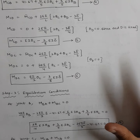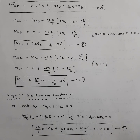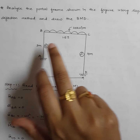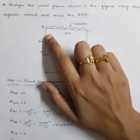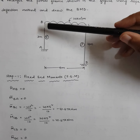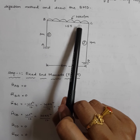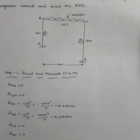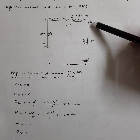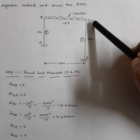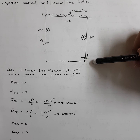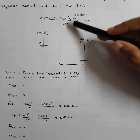Step 3 is writing the equilibrium conditions. We have two joints, B and C. The first equilibrium condition at joint B is MBA + MBC = 0. The second equilibrium condition at joint C is MCB + MCD = 0.